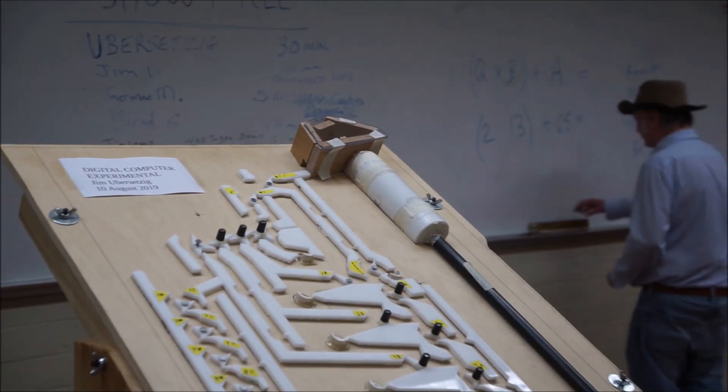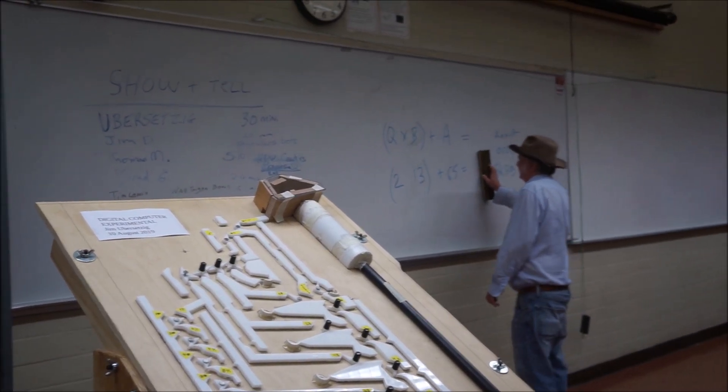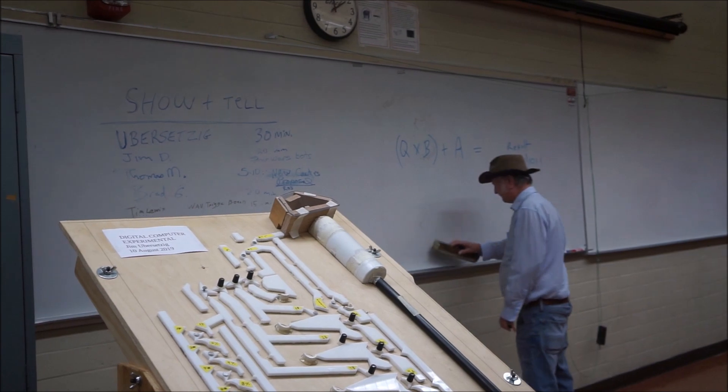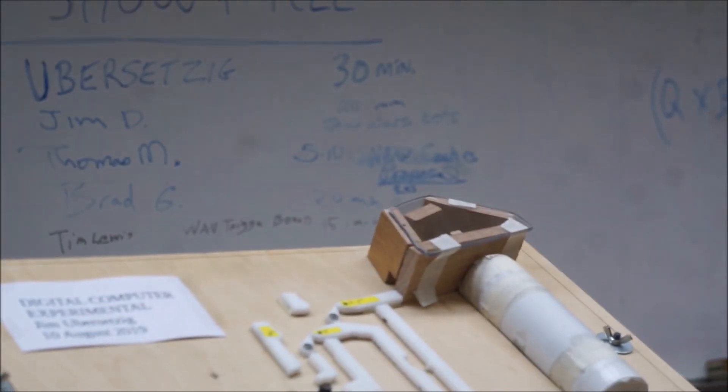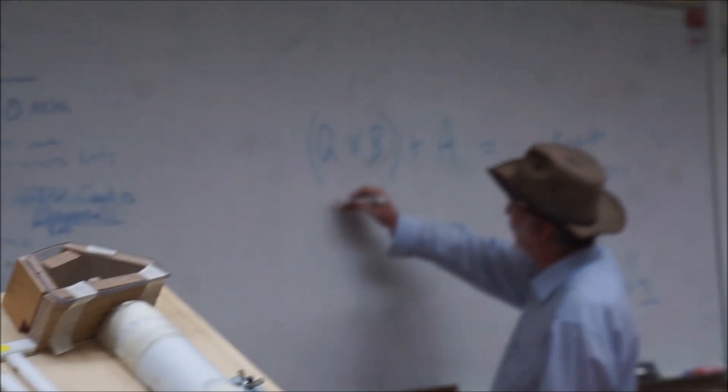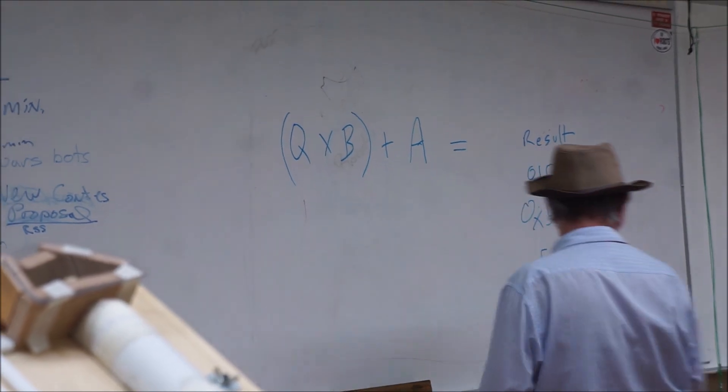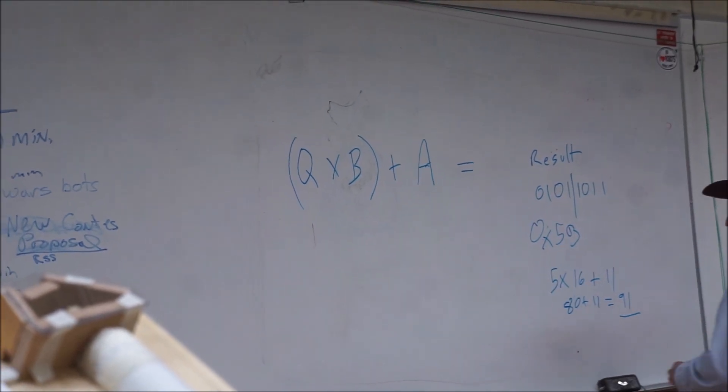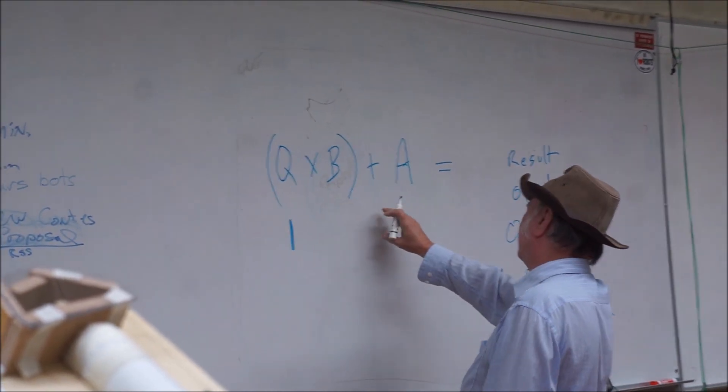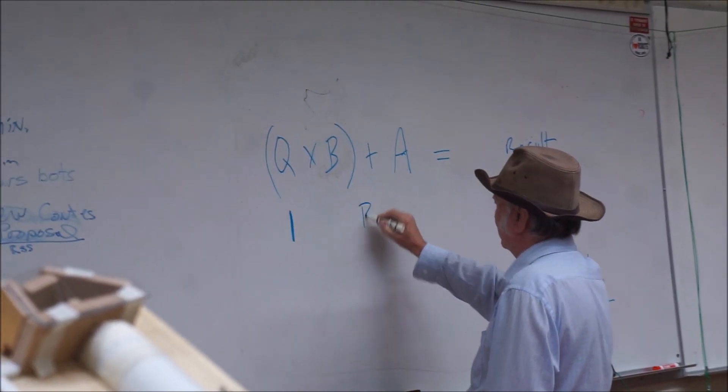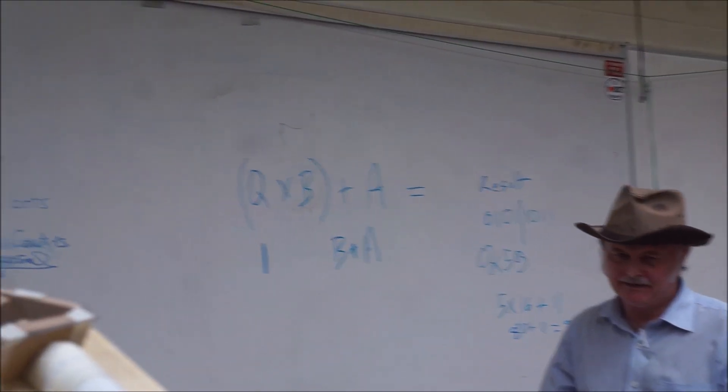What you can do with this machine is, this is the fundamental equation that it solves, but by taking subsets of that, it can add, subtract, multiply, and divide. For example, if you set Q to be 1, then it's 1 times B plus A, so it's just B plus A. So that's how you get it to add. If you set this little thing here to where it marked negate, it will change the sign of the number in A.